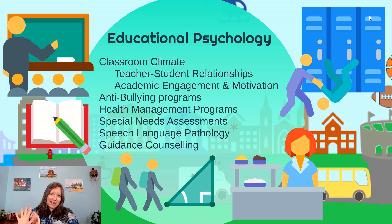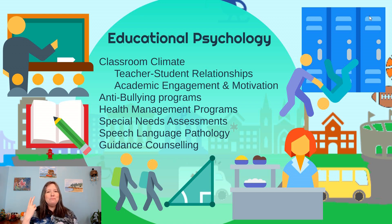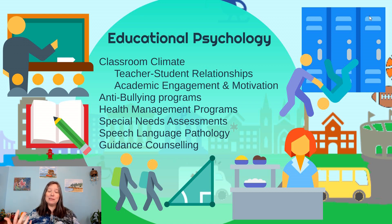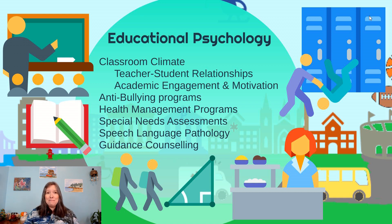Even more important than classroom climate and teacher-student relationships are student outcomes. Two major student outcomes we're interested in are student achievement — are they actually learning things? — and student engagement. Engagement is really: do students pay attention, do they participate, are they motivated, do they keep their mind on task, and do they even like school?